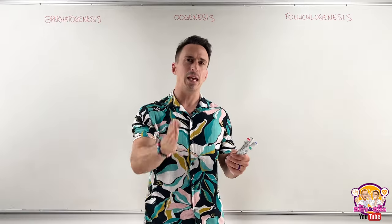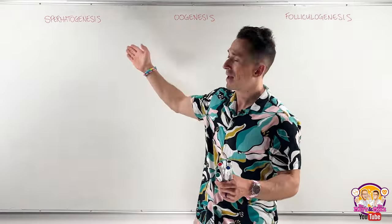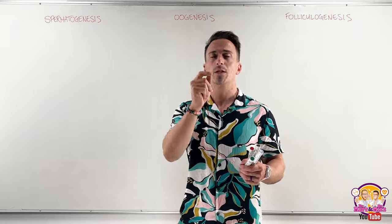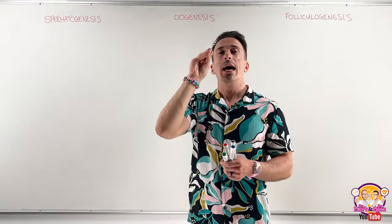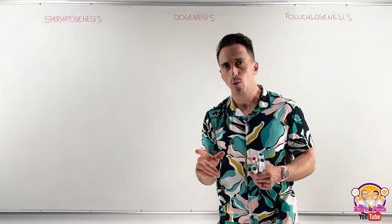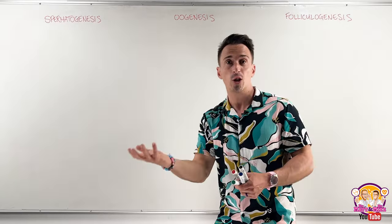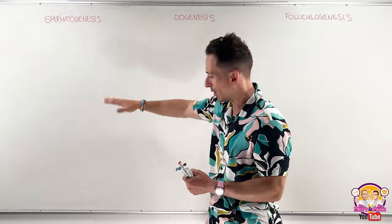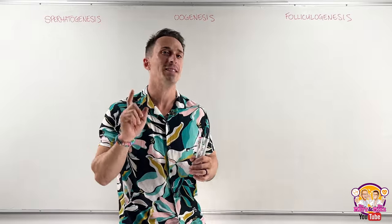I want to begin not with oogenesis or folliculogenesis, but with spermatogenesis. You might be thinking this isn't why you turned this video on, but talking about spermatogenesis first is a great launching-off point. The process of spermatogenesis — creating viable sperm, the equivalent of the viable egg — is a much simpler process, so I can draw it out clearly and then you can compare oogenesis to it and see how it differs.